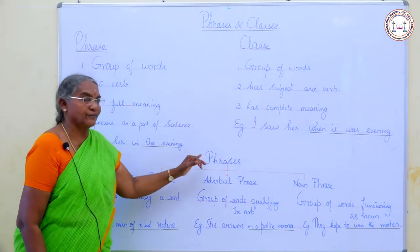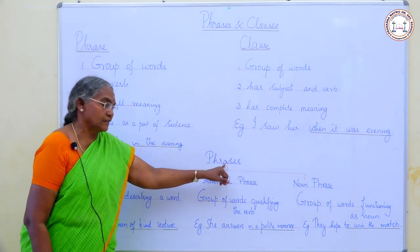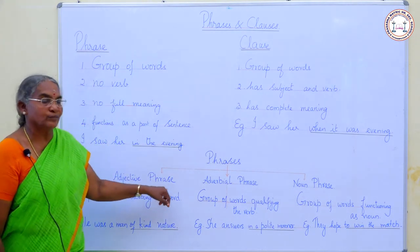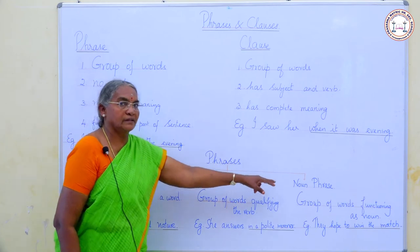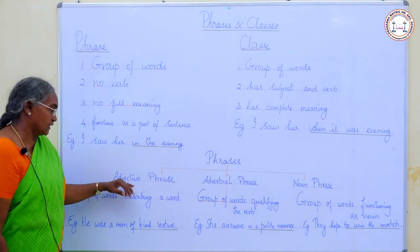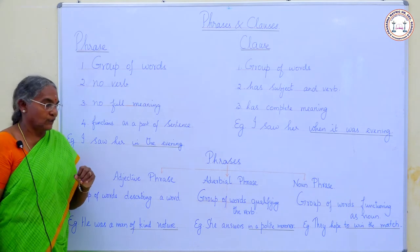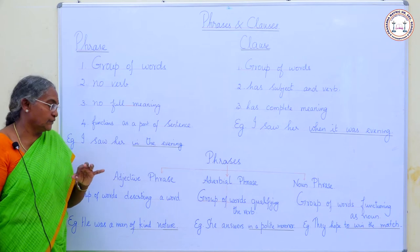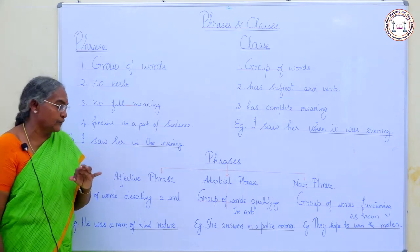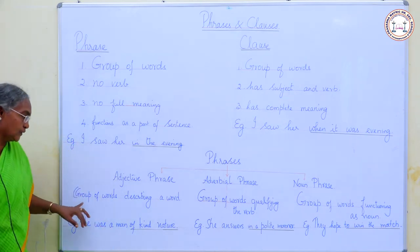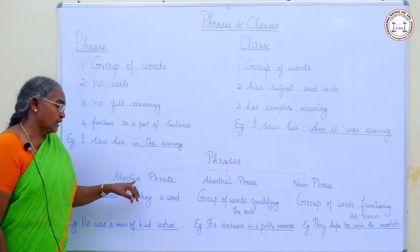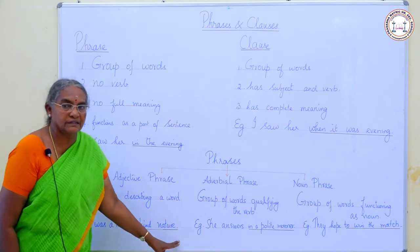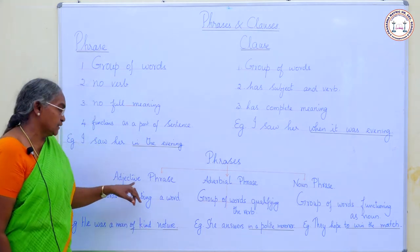Now, we shall learn about phrases in detail. Phrases can be divided into three major groups: adjective phrase, adverbial phrase, and noun phrase. Let's see about the adjective phrase. You all know that an adjective describes a word. So, a group of words describing a word is called an adjective phrase. Example: 'He was a man of kind nature.' Here, 'of kind nature' is the adjective phrase.